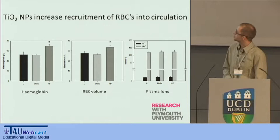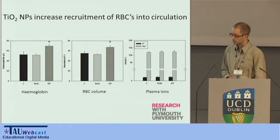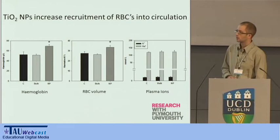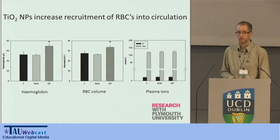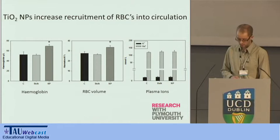What this means for the fish is that there's some level of respiratory distress, but this was only seen in fish exposed to the nanoparticle. The concentration of hemoglobin in the blood and also the hematocrit — the packed red blood cell volume — goes up upon nanoparticle exposure. There was no evidence for an ionoregulatory disturbance. This suggests there's a greater recruitment of red blood cells into the circulation, which can be viewed as a compensatory mechanism by the fish to maintain sufficient oxygenation of secondary tissues.